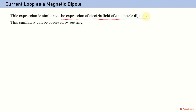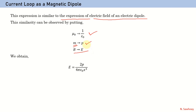This expression is similar to the expression for the electric field due to an electric dipole on the axis. This similarity can be observed by putting μ₀ = 1/ε₀, replacing magnetic dipole moment by electric dipole moment, and magnetic field B by electric field E. When we replace all these terms, we obtain the electric field due to an electric dipole on the axis as E = 2p / 4πε₀x³, which is the same as derived in electrostatics.